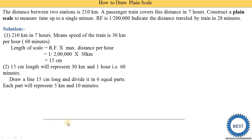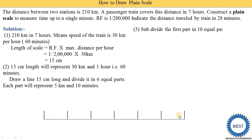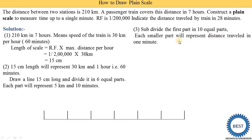We draw a 15-centimeter long line and divide it into 6 equal parts. 15 divided by 6 gives 2.5 centimeters, so one part is 2.5 centimeters. After dividing into 6 equal parts, the first part is further divided into 10 equal parts. Each smaller part will represent the distance traveled in 1 minute.